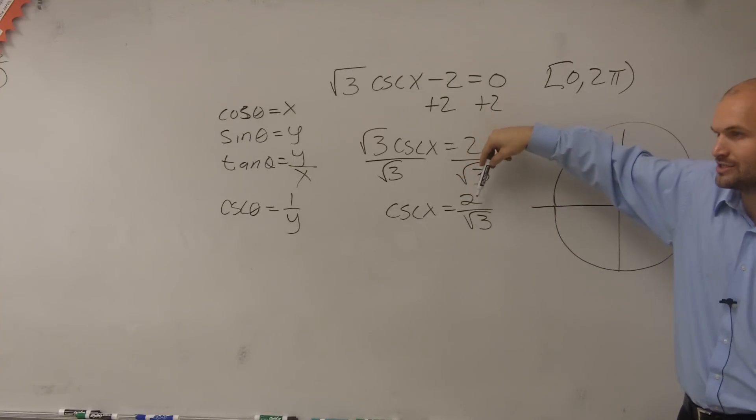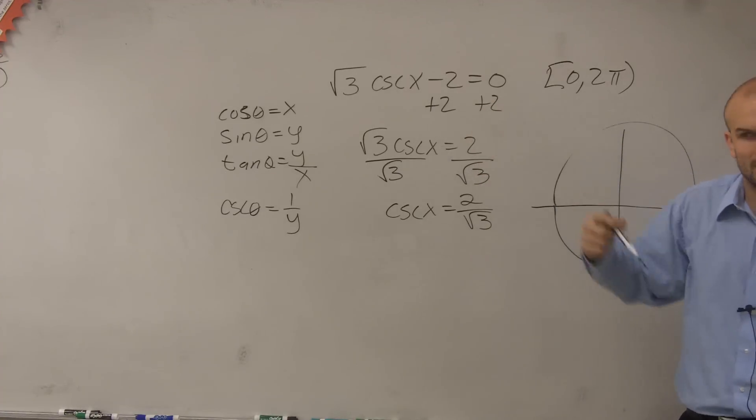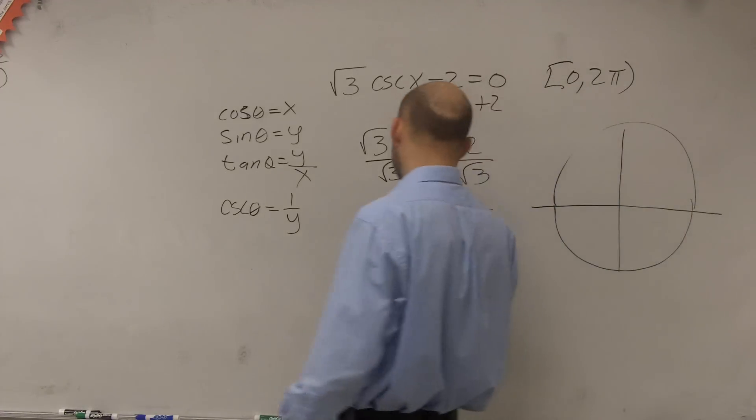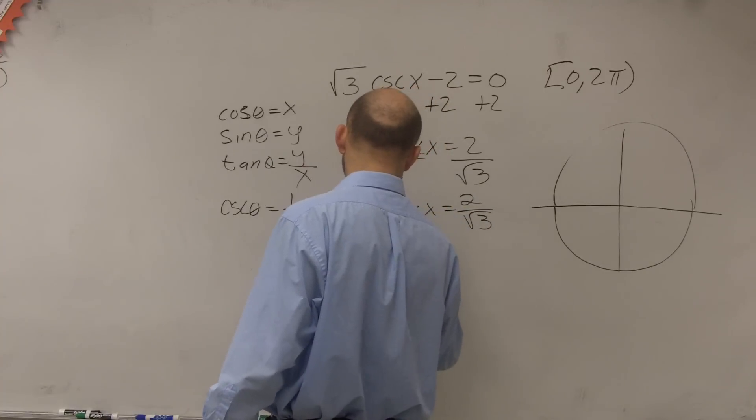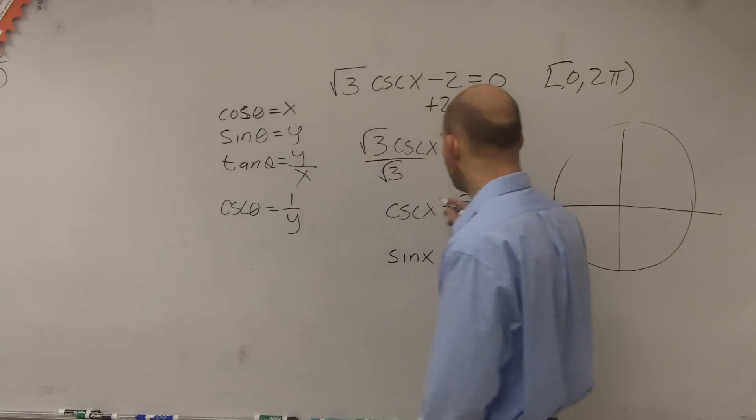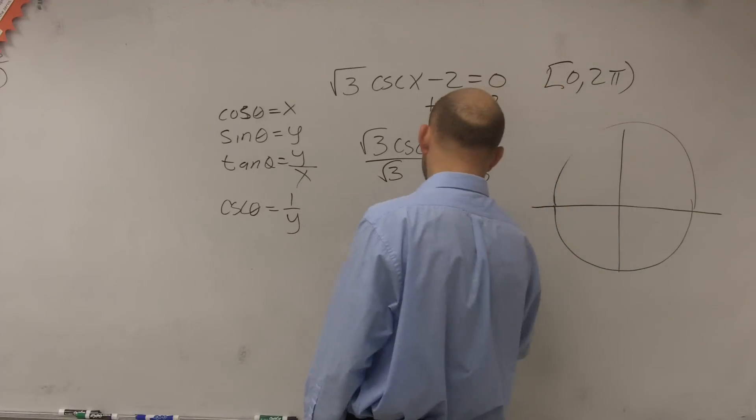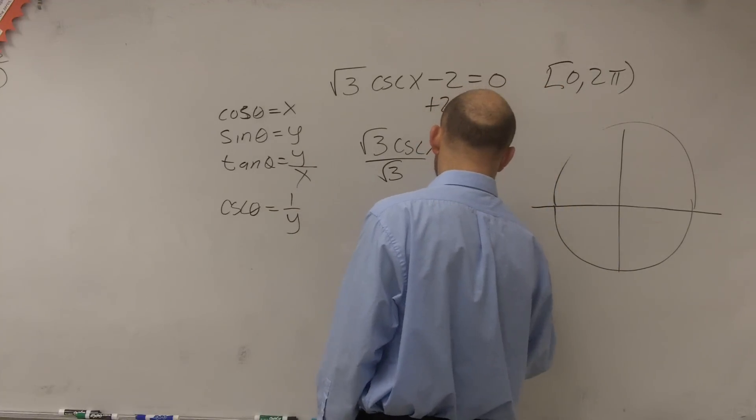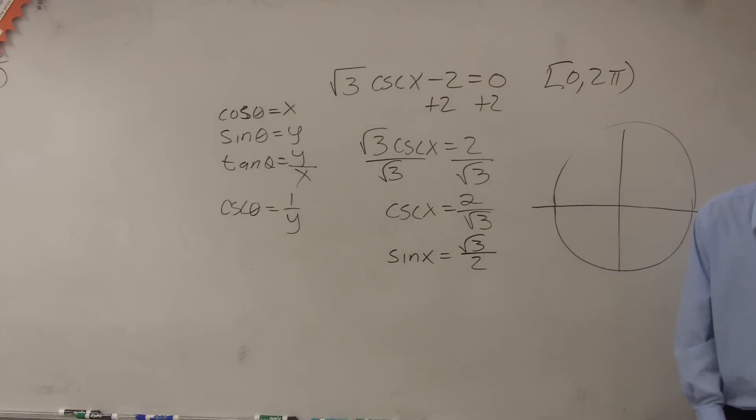So how can you change, if this is written as 1 over y, how can we change it as y? Well, those are just reciprocals of each other, so we just reflect or reciprocate. So therefore, I could say if cosecant of x is equal to 2 over radical 3, that means the sine of x is equal to the square root of 3 over 2.